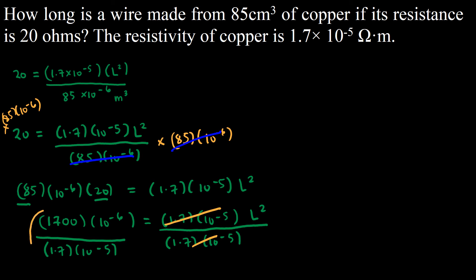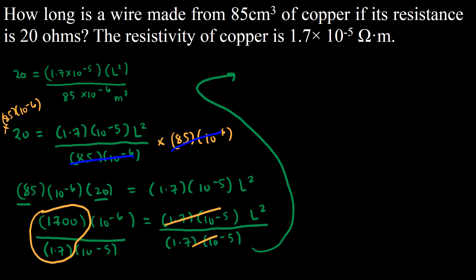Simplifying: 85 times 20 gives 1,700, so we have 1,700 times 10 to the power of negative 6 equals 1.7 times 10 to the power of negative 5 times L squared. Dividing both sides by 1.7 times 10 to the negative 5 gives: 1,700 divided by 1.7 equals 1,000, and 10 to the negative 6 divided by 10 to the negative 5 means subtracting exponents: negative 6 minus negative 5 equals L squared.